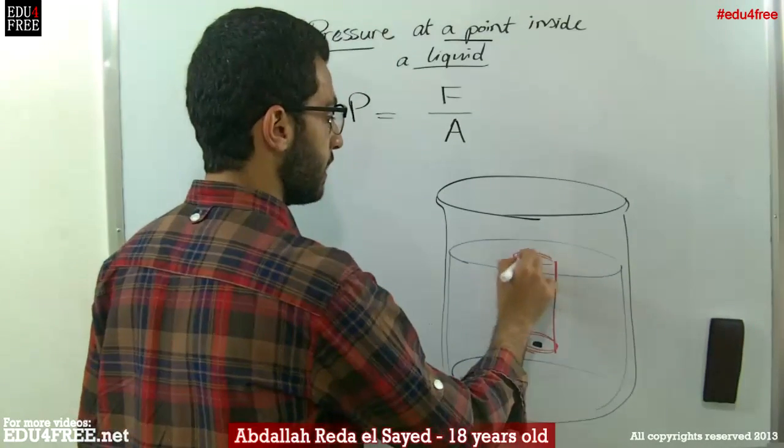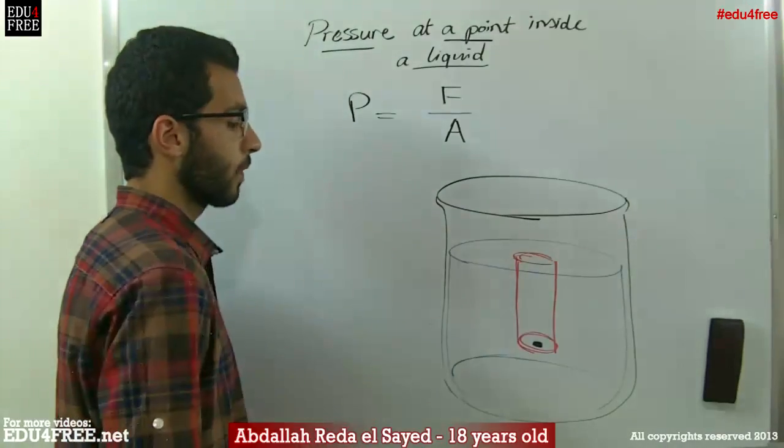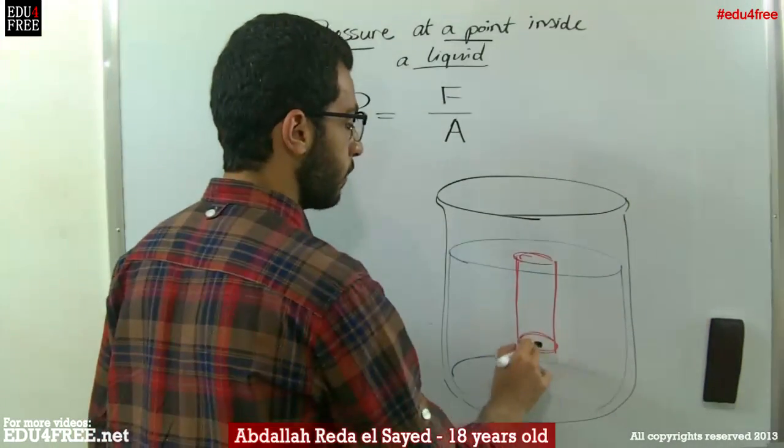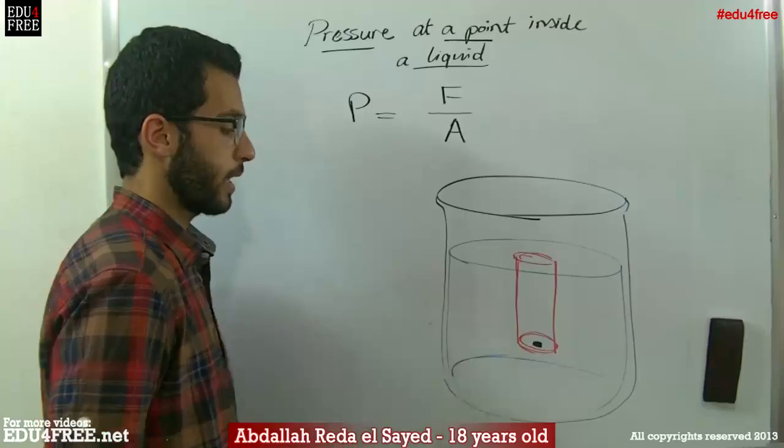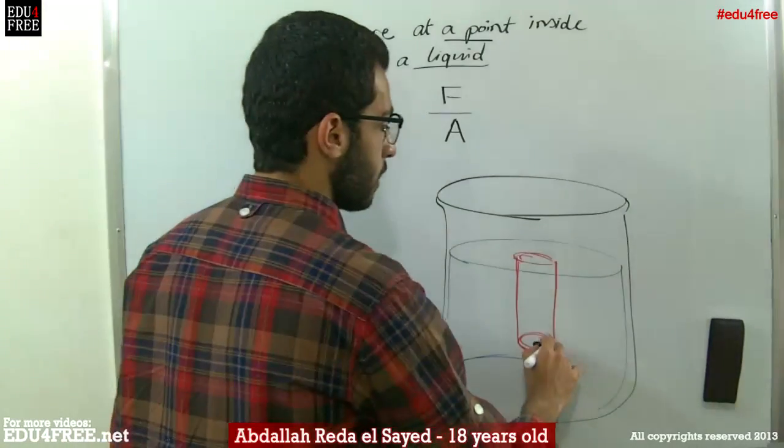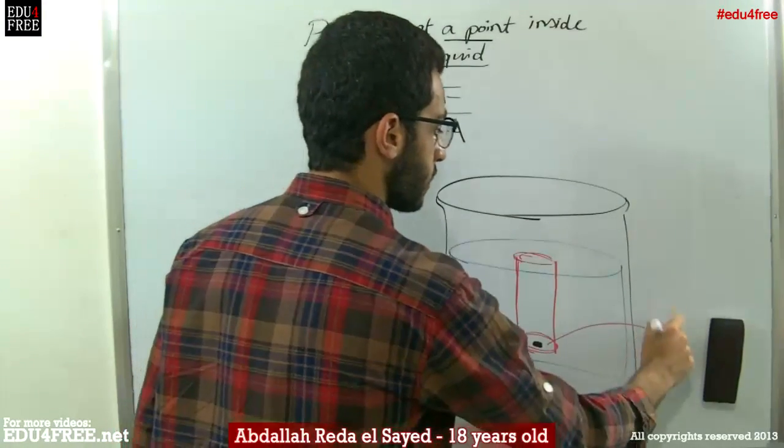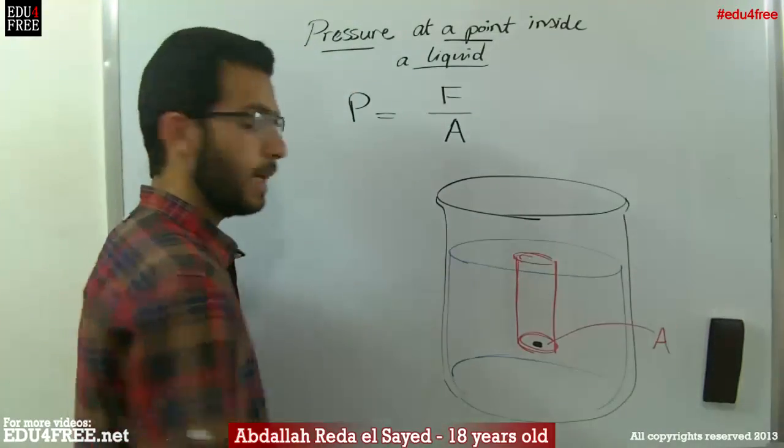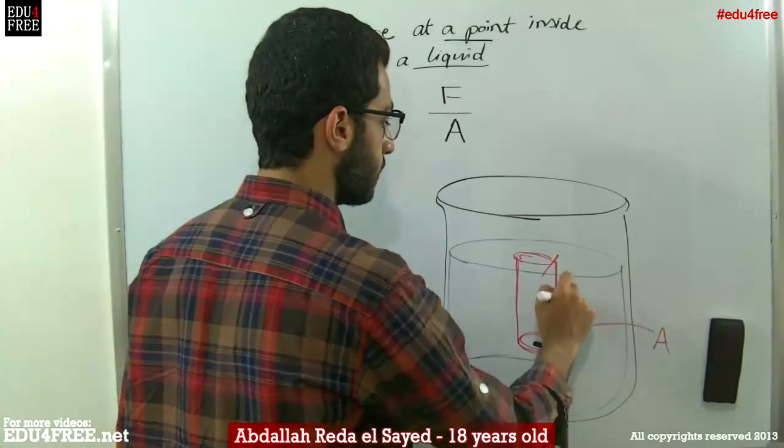This is at the surface of the liquid, and this is at the point that we are going to calculate the pressure at. So, this circle is the cross-sectional area A, and this is the height H.